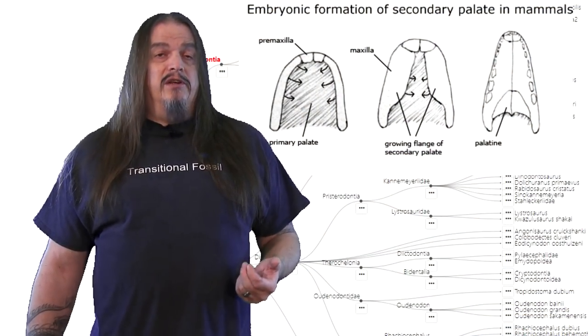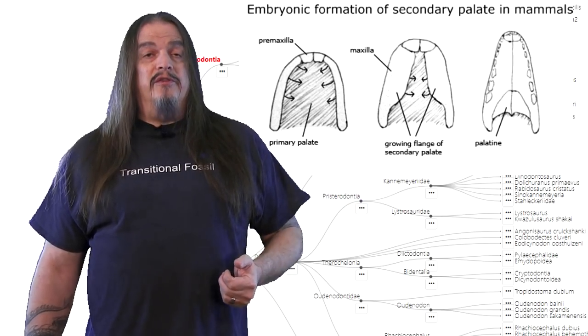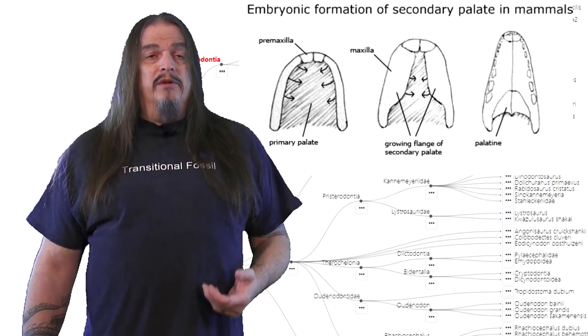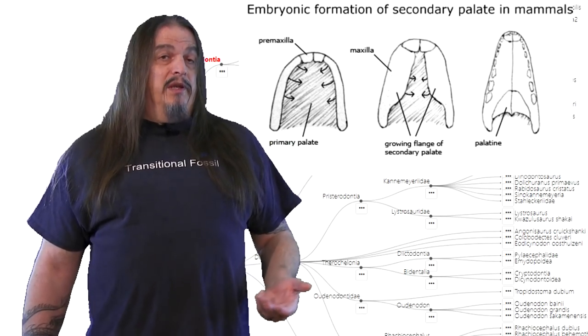Theriodonts had partial beginnings of a secondary palate, which is complete in eutheriodonts. That means that we can actually chew our food. We don't have to gobble it all down right now before we can take a breath.